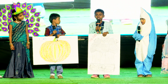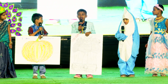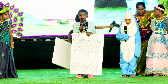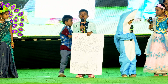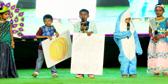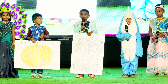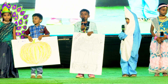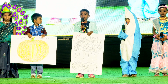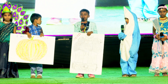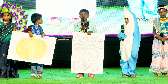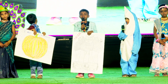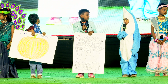Good evening to all. I am the national emblem of our country. I am made up of a picture of four lions, the Ashoka Chakra, an elephant, a horse, and a bull. Thank you.